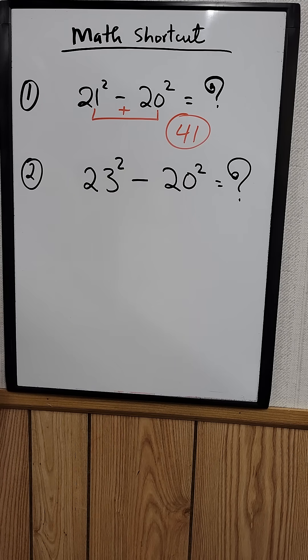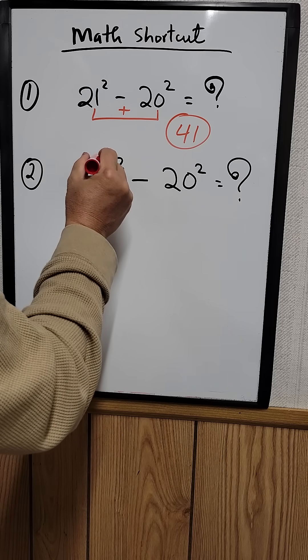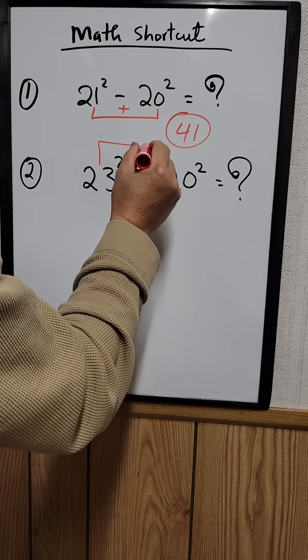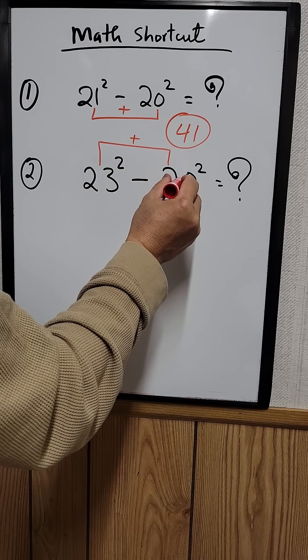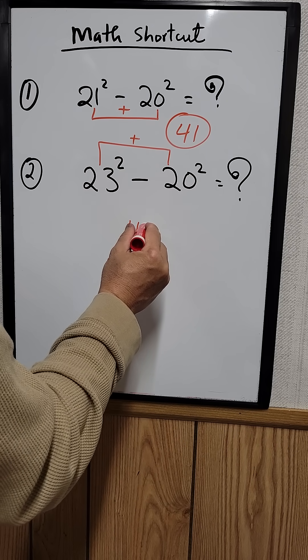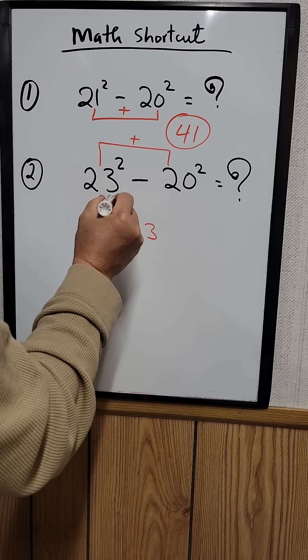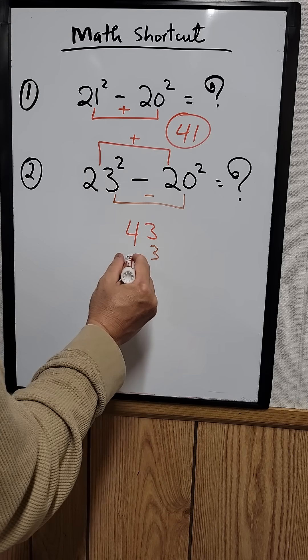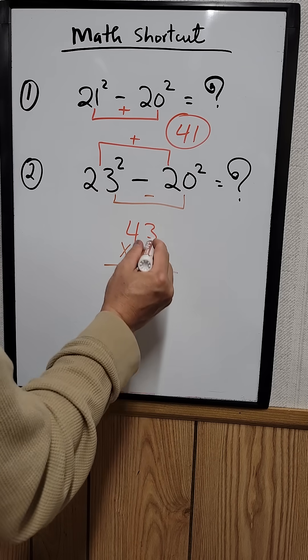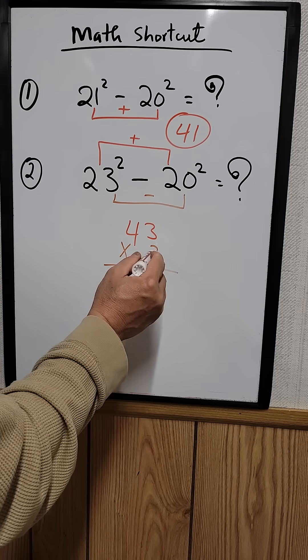What is that equal to? For this one, you need to add them up right here. What is 23 plus 20? That would be 43. And you need to subtract right here: 23 minus 20 would be 3. Then you multiply the two together, so the answer is 129.